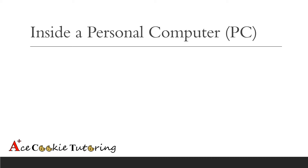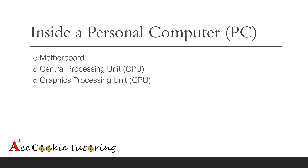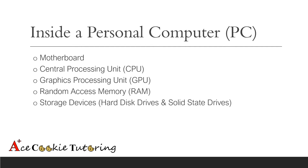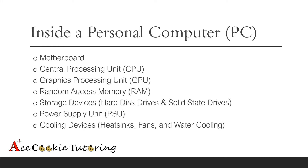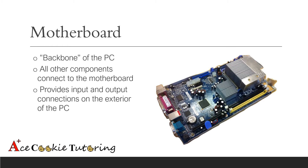Today we're going to take a look at seven main components inside of a personal computer. The first is the motherboard. We have the central processing unit, the graphics processing unit, random access memory, storage devices, the power supply unit, and the cooling devices. The motherboard is basically the backbone of the PC. All the other components connect to the motherboard, and it also provides the input and output connections on the exterior of the PC.